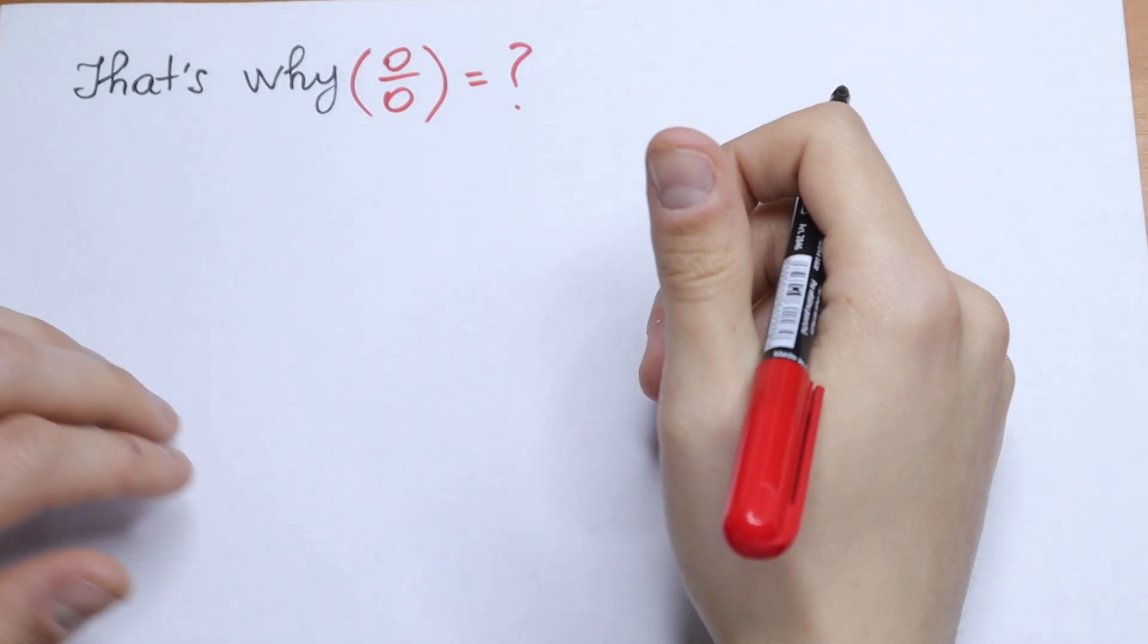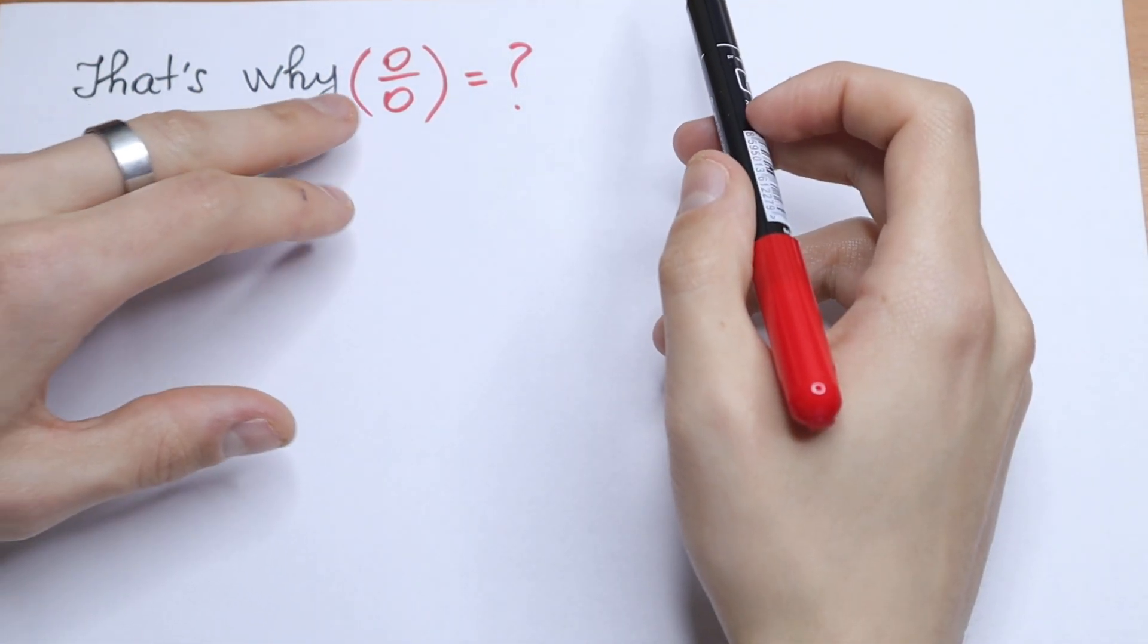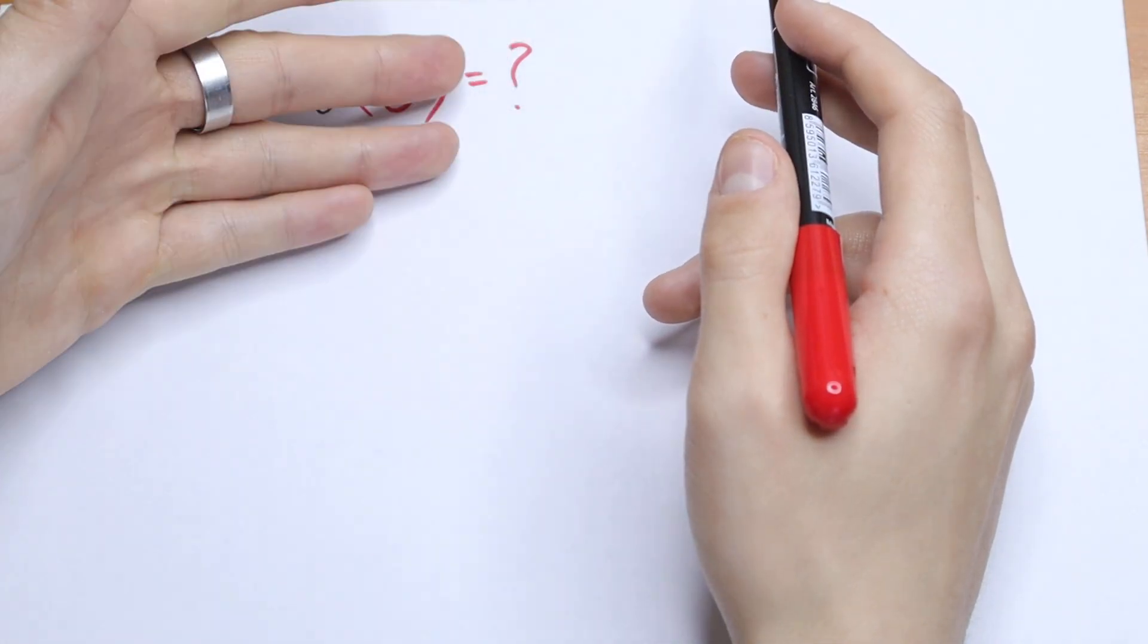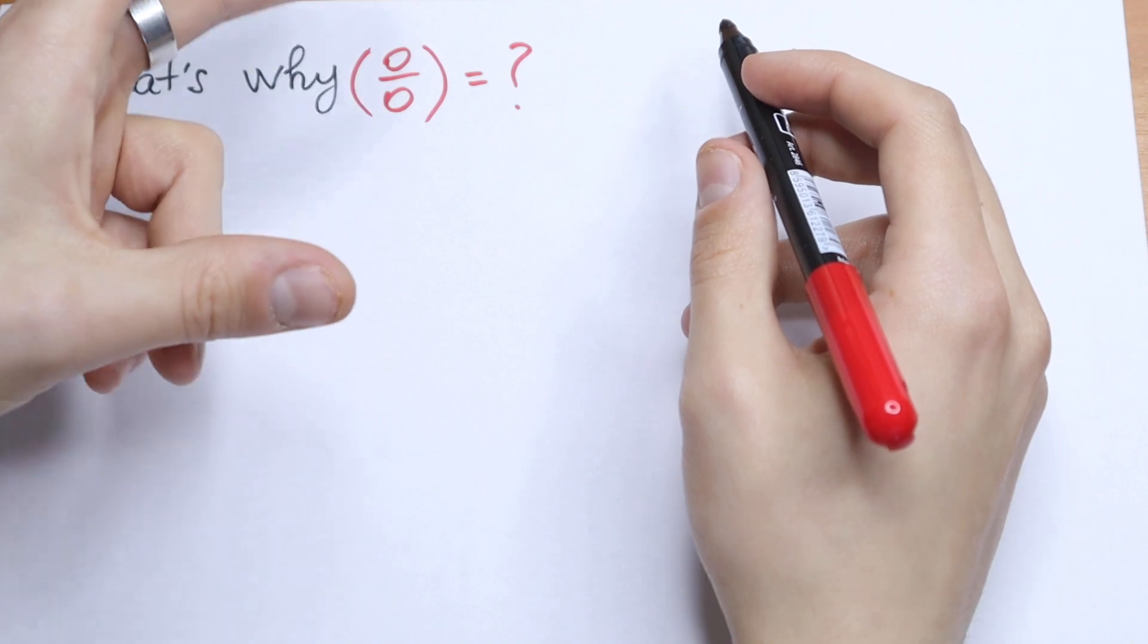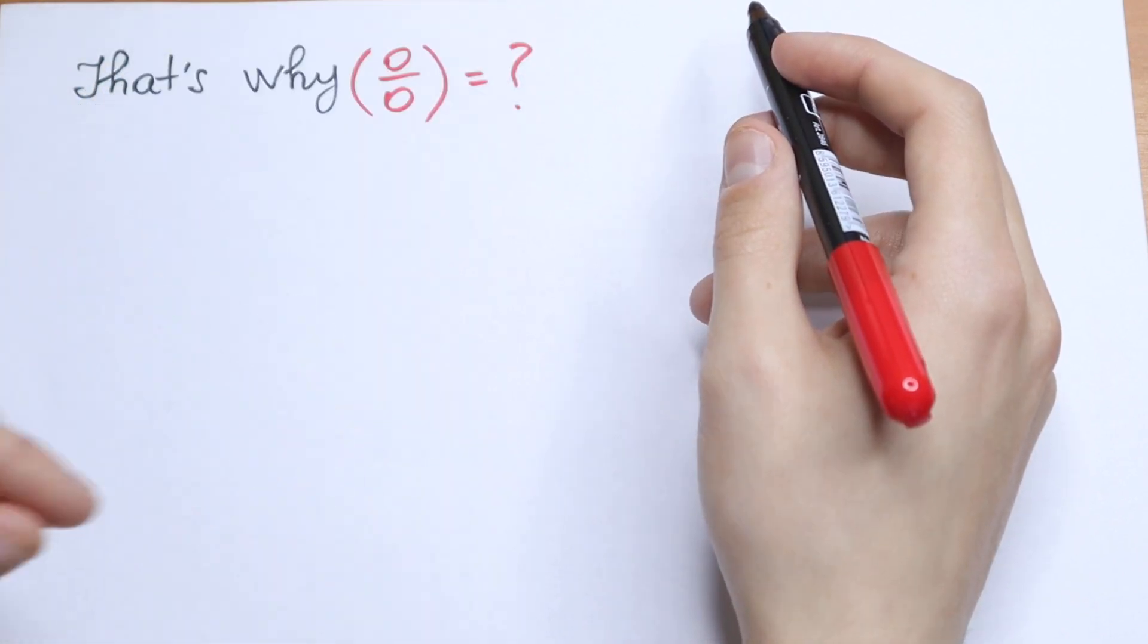Hello everyone, welcome back to Higher Mathematics. In this video I try to explain you why 0 over 0 is undefined. So we don't know what the value that represents. So how can we prove that 0 over 0 is undefined?